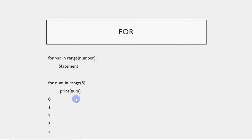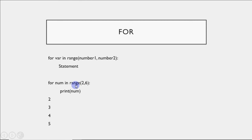Another variation is when you write two numbers: 'for variable in range(number1, number2)'. This is used when you don't want to start from 0. The first number is where you start, and the second number is where you stop — but again, the upper limit is not included. So 'for num in range(2, 6)' means num starts from 2 and goes up to 5; it will not execute for 6. You'll get 2, 3, 4, 5 if you're printing the numbers.